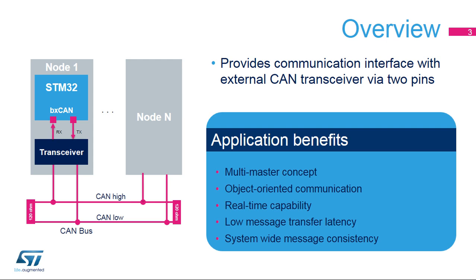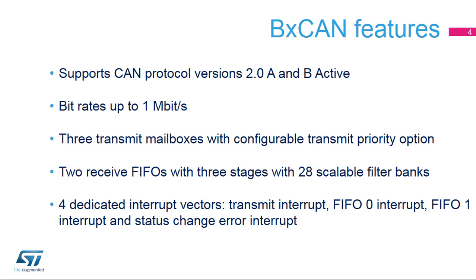Error detection and management mechanism. The STM32 CAN peripheral supports the Basic Extended CAN protocol versions 2.0A and 2.0B active, with a maximum bitrate of 1 megabit per second. The BX CAN includes three transmit mailboxes with a configurable transmit priority option and two receive FIFOs with three stages, with 28 scalable filter banks. This allows the CAN to efficiently manage a high number of incoming and outgoing messages with a minimum CPU load. The BX CAN peripheral also manages four dedicated interrupt vectors.